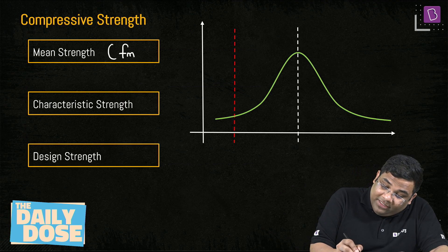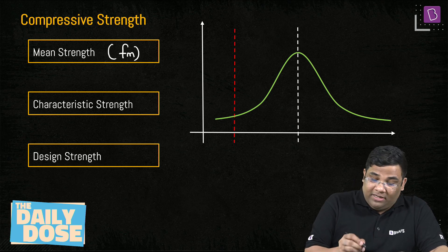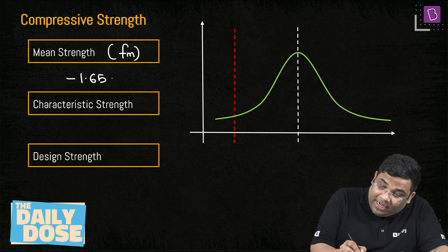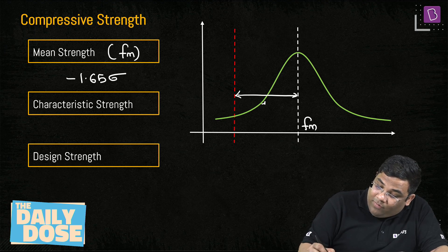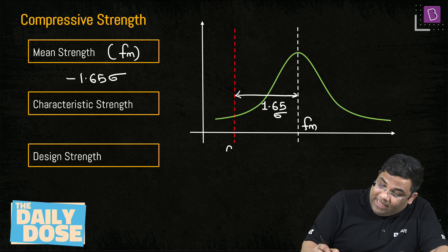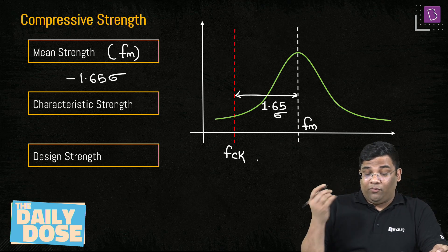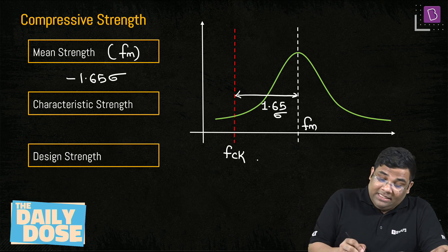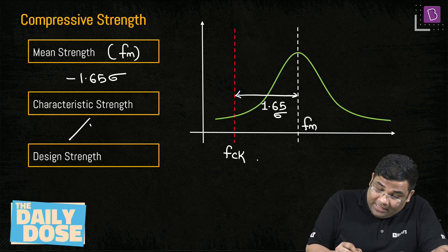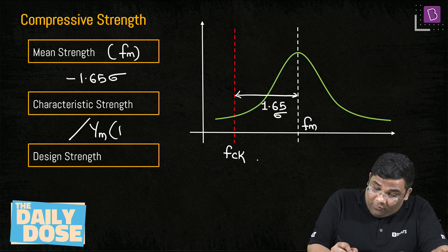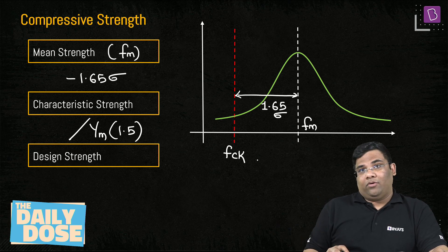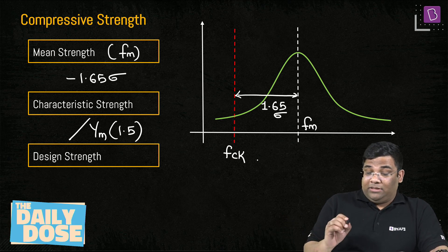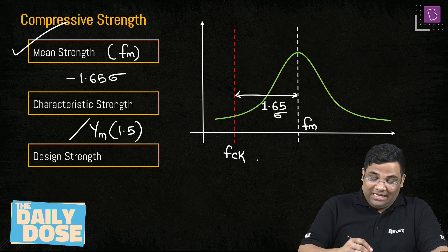Given the mean strength FM, we subtract 1.65σ to get FCK. From the characteristic strength, if you want to find the design strength, divide FCK by the factor of safety for concrete, which is 1.5. This gives you the design strength of concrete. So the relation is: mean strength → characteristic strength → design strength.